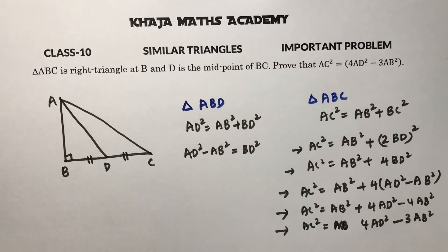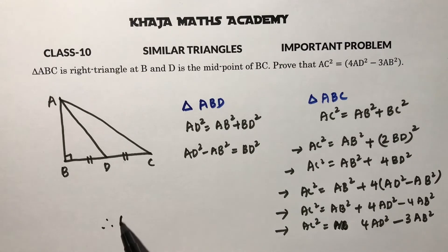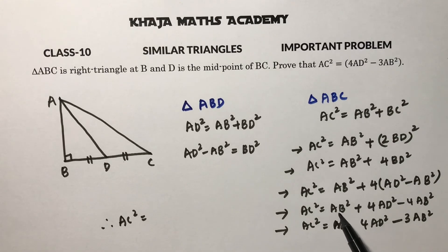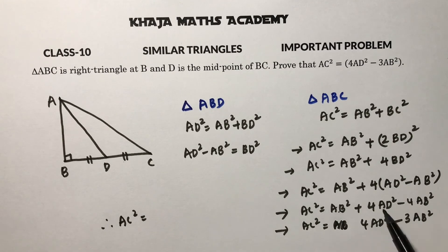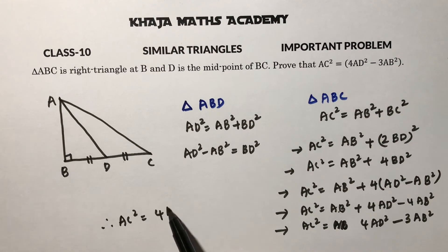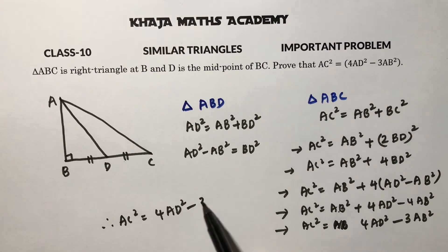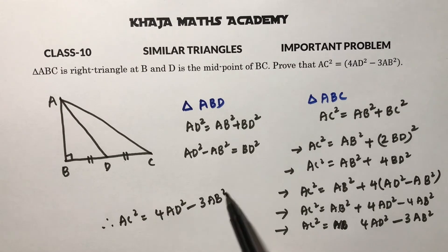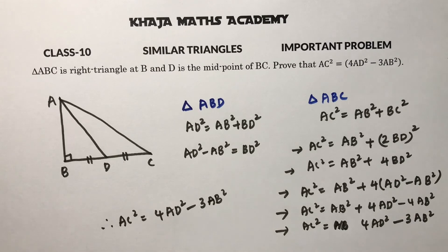Therefore, the final result is AC² = 4AD² − 3AB². This is what we needed to prove.